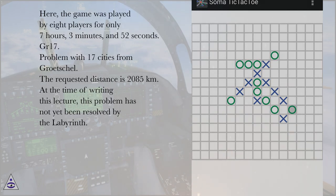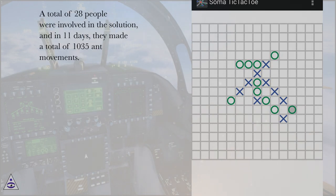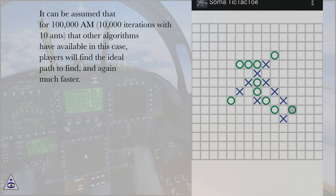GR 17: Problem with 17 cities from Grochel. The requested distance is 2,085 kilometers. At the time of writing this lecture, this problem has not yet been resolved by the labyrinth. A total of 28 people were involved in the solution, and in 11 days, they made a total of 1,035 ant movements. It can be assumed that for 100,000 AM, 10,000 iterations with 10 ants that other algorithms have available in this case, players will find the ideal path, and again much faster.